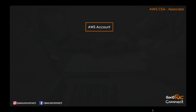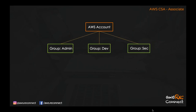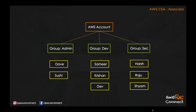In your AWS account, you can create three groups: Admin, Dev, and Security, with different users inside each. You can give explicit permissions to the Dev group — for example, access to CloudFront — and two more explicit permissions to another group. These permissions are only applicable at the group level. Permissions given to the Dev group will not be applicable to other groups. When you attach a policy at the group level — like the Admin group — it is applicable to all users inside that group.